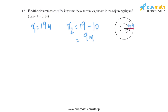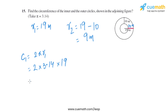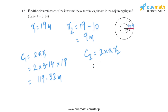Now we have the radius of both circles and can find their circumferences. The circumference of the outer circle is 2πR1, which equals 2 × 3.14 × 19. The circumference of the outer circle is 119.32 meters.